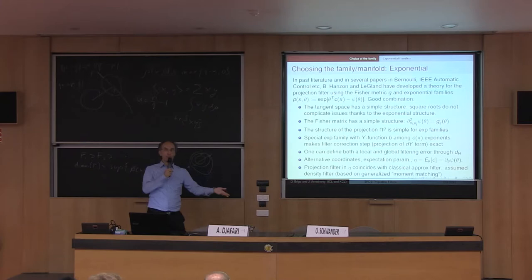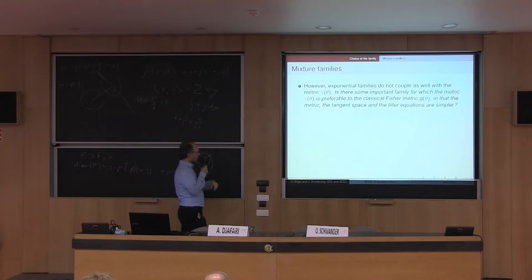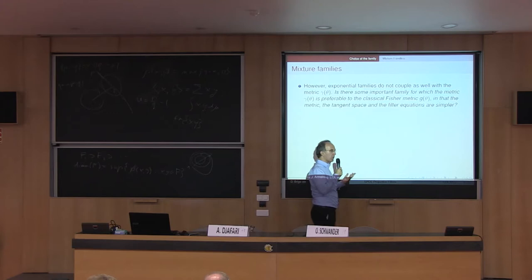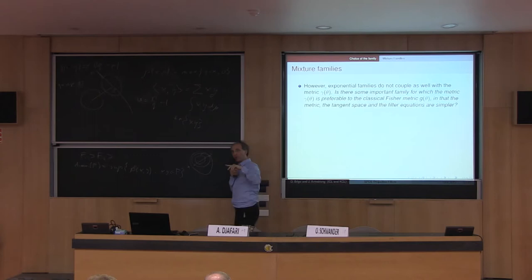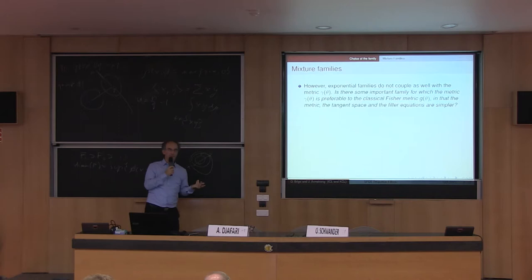One key point is that exponential families do not couple well with the direct L2 metric. They work well with the Hellinger distance when you take the square root, but they don't work as well with the direct metric gamma. The absence of the square root makes the calculations more complicated.